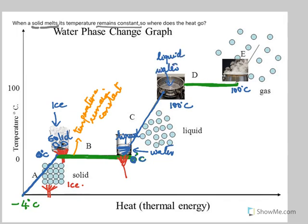The liquid water changes into gas — which is vapor. A change of state takes place: liquid changes to a gas, but the temperature remains constant.